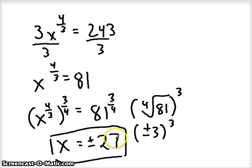And if we check it, positive 27, we would take the cubed root of 27, which is 3, and bring it to the power of 4. So that's 81. 81 times 3 is 243, so the positive checks out. The negative checks out just the same. I'm going to run out of time, so that one's up to you. See you in the next video.